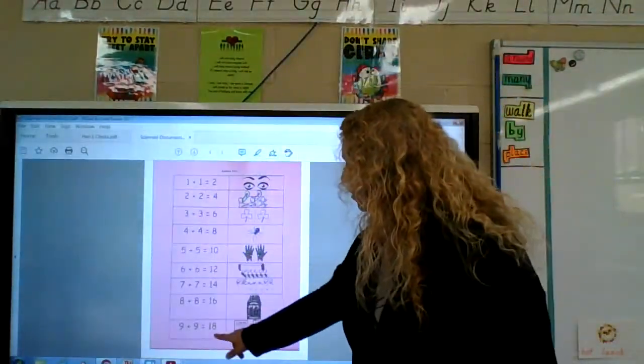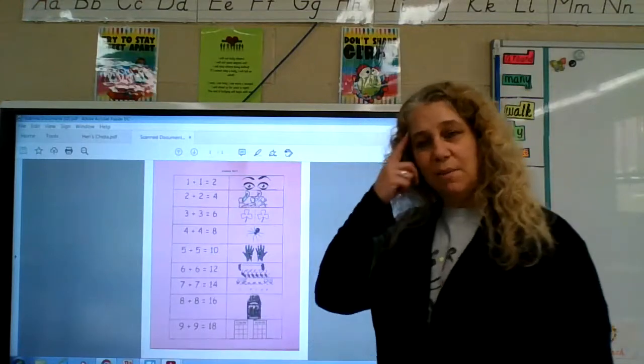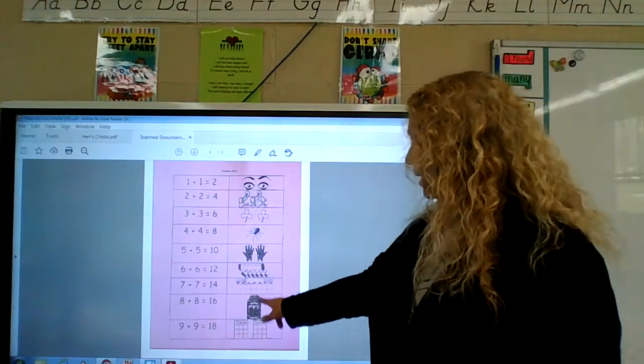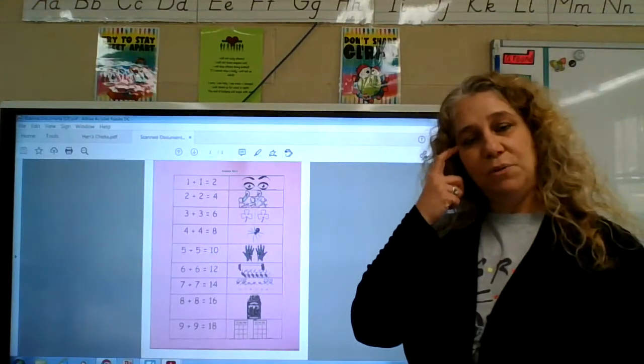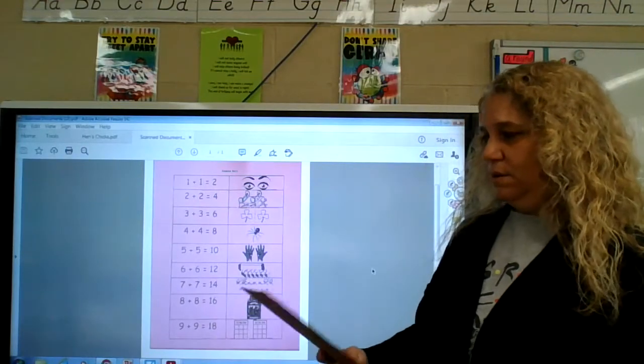That one's kind of hard to remember until we learn the 9. We're going to learn a 9 trick that's going to make that easier. But, 9 plus 9 equals 18. These are the ones that get a little harder. You just have to memorize them. Picture this to help you if that helps you.